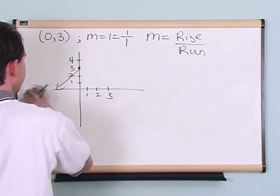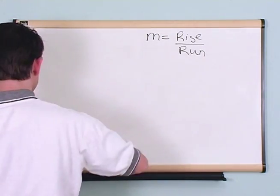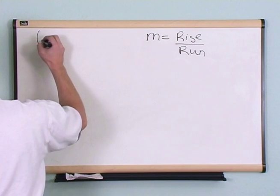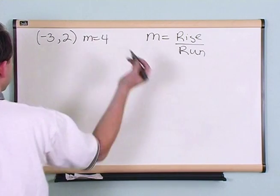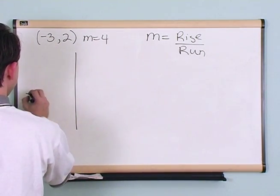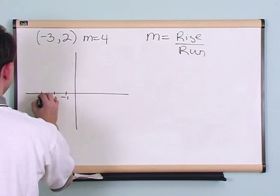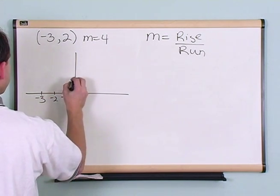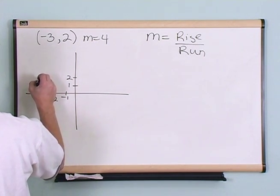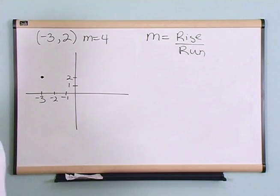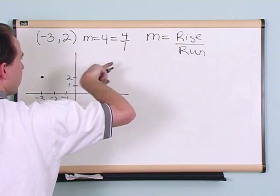Let's do a couple more so you can get the hang of it. Let's say you have the point (-3, 2) with a slope of 4. First I've got to plot my point at negative 3 on the x-axis and 2 on the y-axis. The slope is 4, which is the same as 4 over 1 — meaning I rise 4 units and run to the right 1 unit.